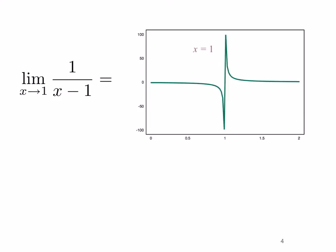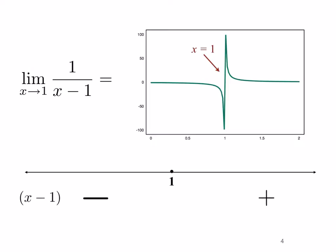Consider the limit as x approaches one of one divided by x minus one. This is one of the basic functions — just 1/x translated one unit to the right. Notice that when x equals one, the denominator approaches zero. We have a picture of the graph to the right. Now if we make a sign line, we know from our previous slide that this limit is going to be plus infinity or minus infinity — we just need to determine which one depending on whether we're approaching one from the left or the right.